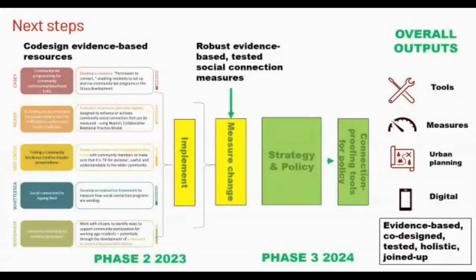The next step in our project is to take all the evidence from the research and co-design resources with our partners and community members. For example, with Red Cross we are improving the community resilience tool, and with Wyndham Council we're developing a skills and interest exchange. We'll then implement these and measure change using a new suite of measures that actually measure social connection linked to a theory of change. Phase three is about developing social connection proofing tools for organizations and policy, with overall tools, measures, and guides for urban planning and on digital and hybrid connection.